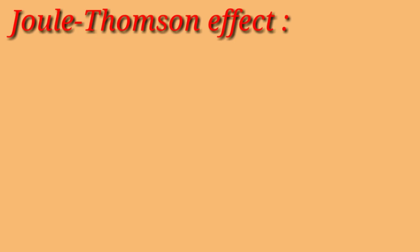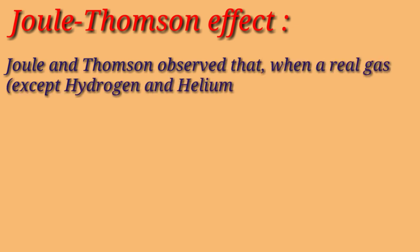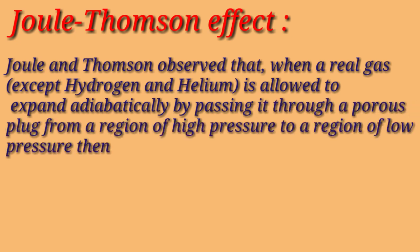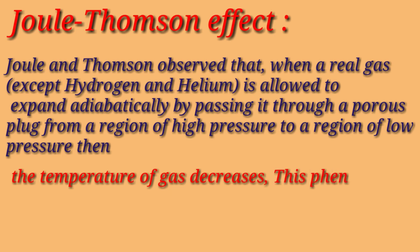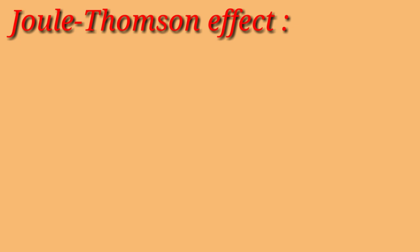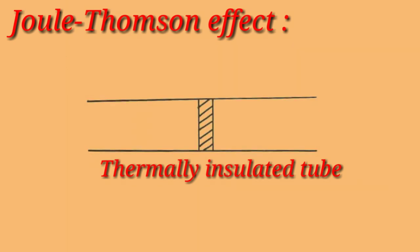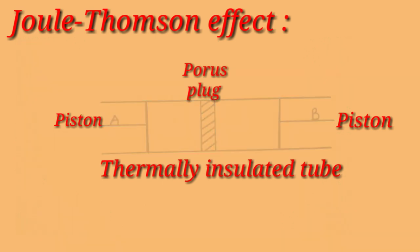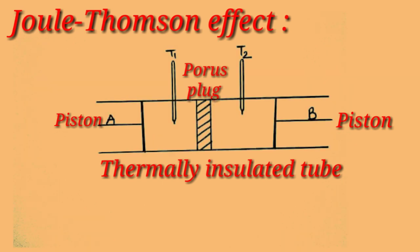Next is the Joule-Thomson effect. Joule and Thomson observed that when a real gas is allowed to expand adiabatically by passing through a porous plug from a region of high pressure to low pressure, the temperature of the gas decreases. This phenomenon of lowering in temperature is known as the Joule-Thomson effect. The experimental arrangement consists of a thermally insulated tube fitted with a porous plug in the middle and two frictionless pistons on either side, with two sensitive thermometers placed on either side of the plug.